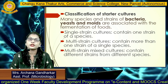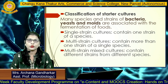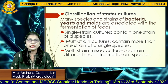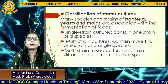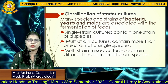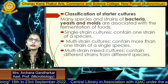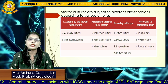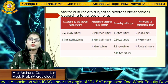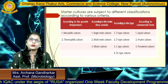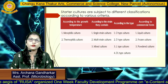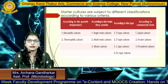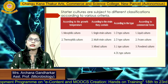Now, the classification of starter cultures. A number of organisms — bacteria, yeast, and mold — are associated with the fermentation of foods. There are three types: single strain culture, containing only one strain of a species; multi-strain cultures, using more than one strain of a single species; and multi-strain mixed culture, using different strains from different species.